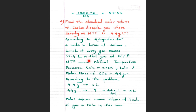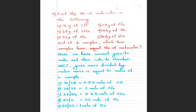Molar mass of CO₂: 1 C = 12, 2 O = 32, total = 44 grams. The density is 4.4 grams per liter, meaning 1 liter has a mass of 4.4 grams. So 4.4 grams occupies 1 liter. For 44 grams (1 mole), the volume = (44/4.4) × 1 = 10 liters. Therefore, the standard molar volume of carbon dioxide is 10 liters.